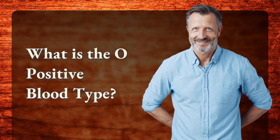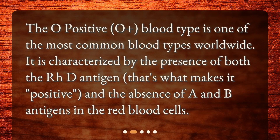What is the O positive blood type? The O positive, or O+, blood type is one of the most common blood types worldwide. It is characterized by the presence of the RhD antigen — that's what makes it positive — and the absence of A and B antigens in the red blood cells.